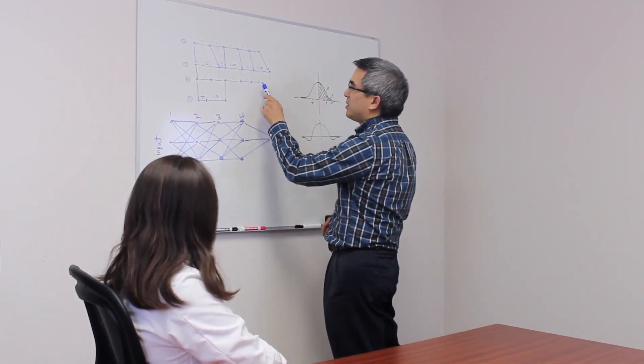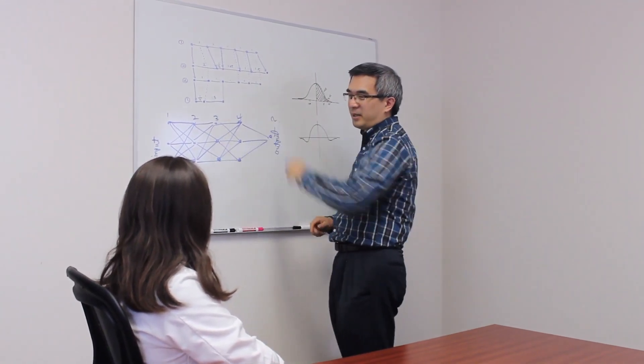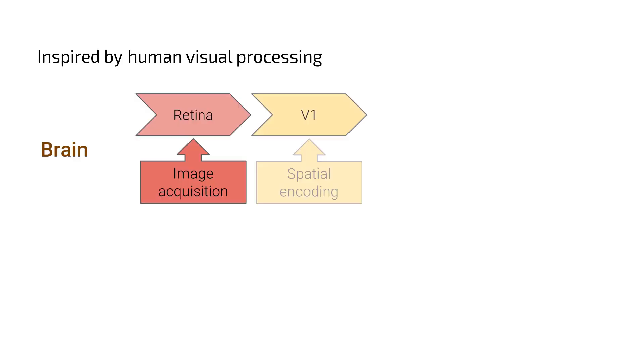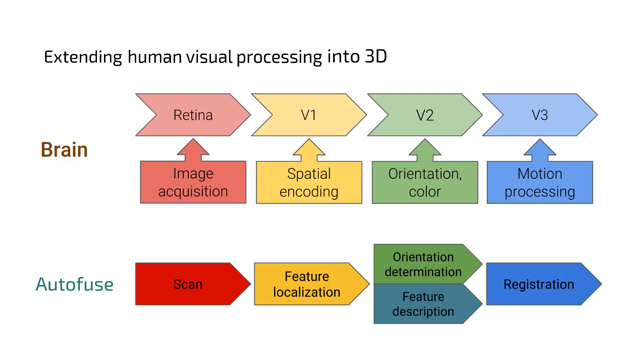Before, it was impossible to come by 3D registration software that could reliably and properly handle differences in orientation, translation, and variations in intensity. It didn't exist. Now this is a reality and Autofuse can do this with five-ninths of probability.